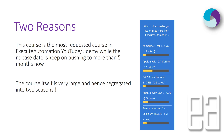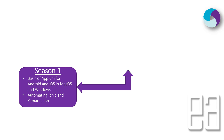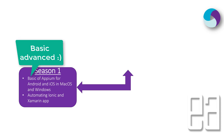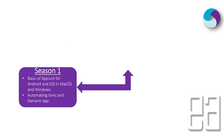This course is very large and hence segregating it into two seasons makes sense. Season 1 is going to focus on the basics of Appium for Android and iOS in both Mac and Windows ecosystems. These are advanced concepts not already covered in the basic YouTube series, and the technology and applications automated in Season 1 are completely different from what was covered previously.